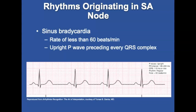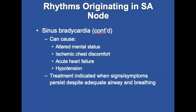With sinus bradycardia, the pacemaker is still in the sinus node but the rate is less than 60, and an upright P wave precedes every QRS. The PRI interval is 0.12 to 0.20 seconds and QRS is 0.11 seconds. The very slow heart rate leads to inadequate cardiac output and precipitates electrical instability. In healthy adults and conditioned athletes it may be asymptomatic or occur during sleep. In other adults, sinus bradycardia may cause altered mental status, ischemic chest discomfort, acute heart failure, and hypotension.